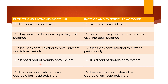Receipt and payment account is not a part of the double entry system — we make it, but it is not included in the double entry system. Whereas income and expenditure account is very much a part of the double entry system. The last point: receipt and payment account ignores non-cash items like depreciation and bad debts — depreciation is not a receipt or payment to anybody, it is a provision, so it will not be recorded. But all non-cash items will find a place in income and expenditure account — depreciation, bad debts, and any other non-cash items will be recorded there.